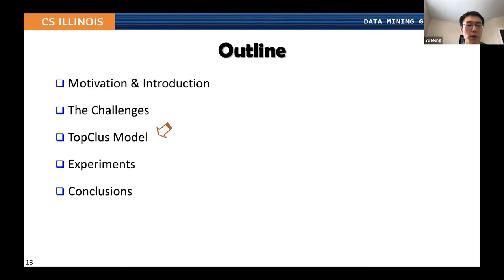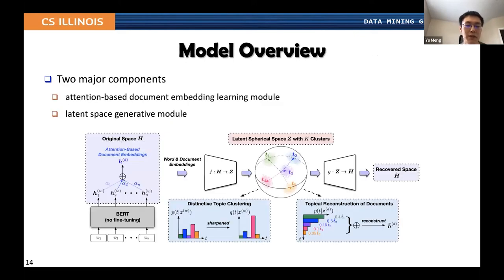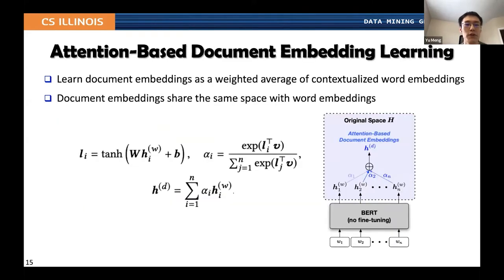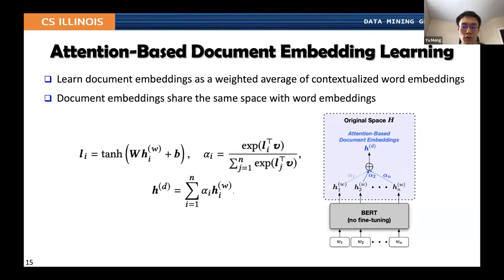Given the challenges, we propose a new model TopClass to address them. TopClass has two major components. The first is an attention-based document embedding learning module, and the second is a latent space generative module which derives a latent space for clustering. The attention-based document embedding learning derives a document embedding as the weighted average of contextualized word embeddings, with parameters jointly learned via the second module. This design allows document embeddings to share the same space with word embeddings so they can be jointly used for topic discovery.